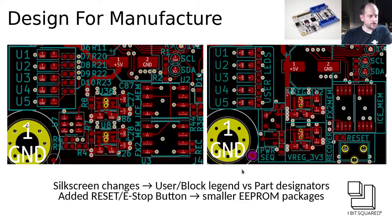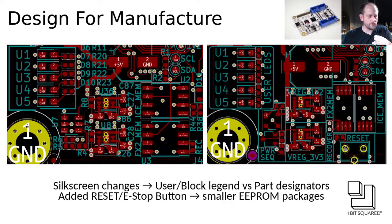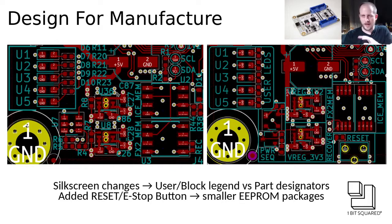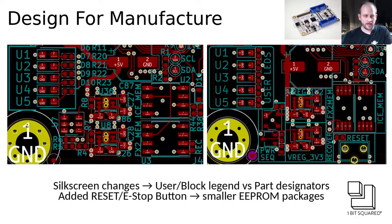Another thing I did was change the silkscreen on the board. This is something I learned from showing off the hardware at different events — it is nice to have a legend of which functionality sections there are on the PCB. The labels of the IDs of the parts are useful if you are developing on the board and doing a lot of soldering and rework. It is not very useful even in assembly — you can use something like interactive HTML BOM, which is an amazing tool and plugin for KiCad, or KiCad itself to find the parts and geographically locate them on the board. So in my opinion, having a legend on the board itself is more useful.